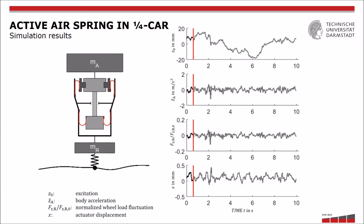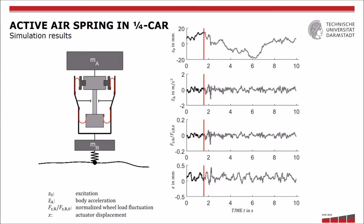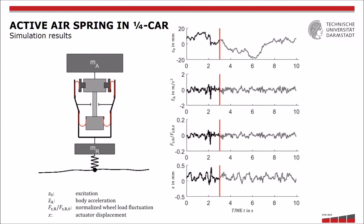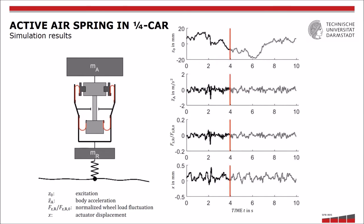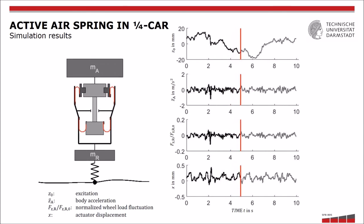The strut is mounted between the body mass and the wheel mass, and the wheel is modeled as a linear spring. The spring force is adjusted by changing the diameter of the top area of the air spring.